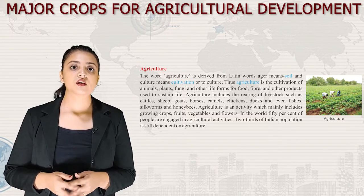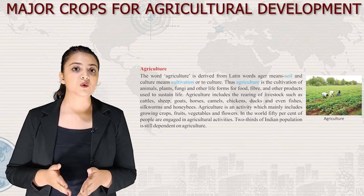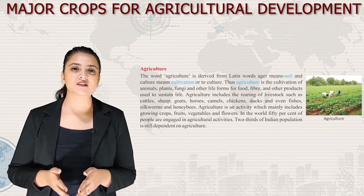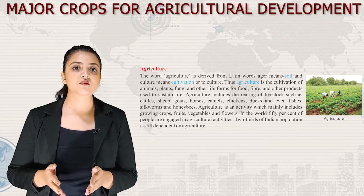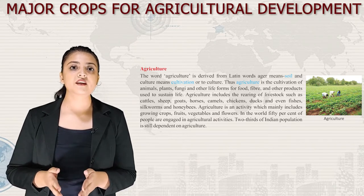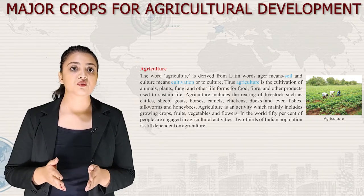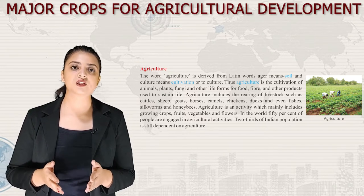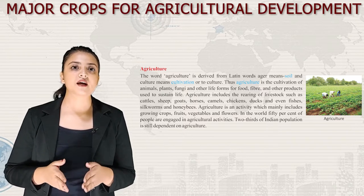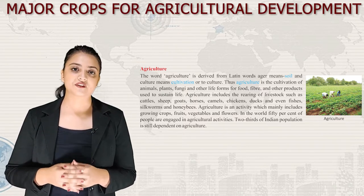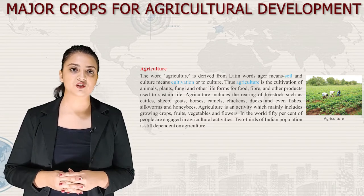Agriculture includes the rearing of livestock such as cattle, sheep, goats, horses, camels, chickens, ducks and even fishes, silkworms and honeybees. Agriculture is an activity which mainly includes growing crops, fruits, vegetables and flowers. In the world, 50% of people are engaged in agricultural activities. Two-thirds of the Indian population is still dependent on agriculture.